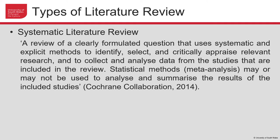If you are reading journal articles you might come across the heading 'systematic literature review.' A systematic literature review is a review of clearly formulated questions that uses systematic and explicit methods to identify, select, and critically appraise relevant research, and to collect and analyze data from the studies included. Statistical methods such as meta-analysis may or may not be used to analyze and summarize the results. It is a highly structured process whereby you select clear inclusion and exclusion criteria based on your research question and systematically work through all literature that meets those criteria.